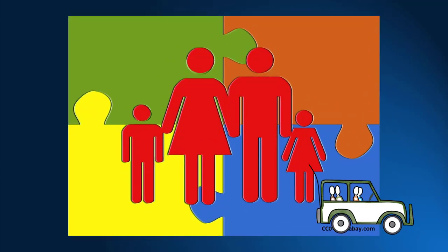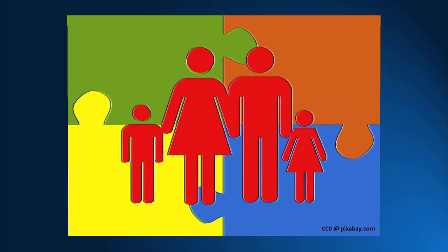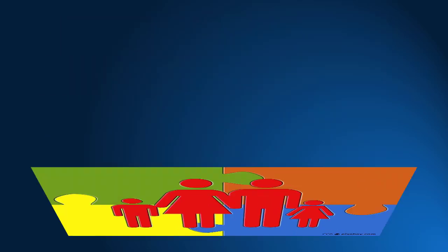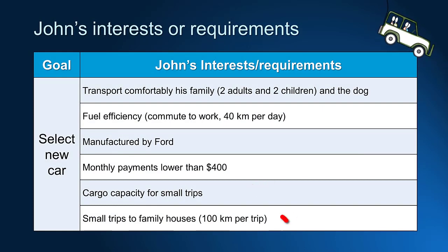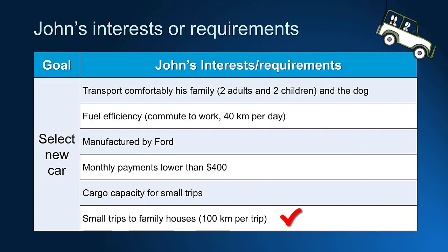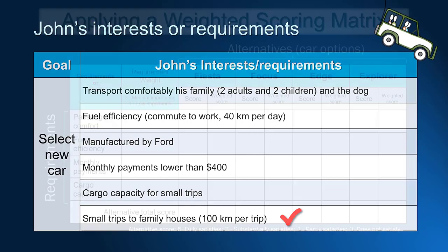Let's see who is involved in the decision: John, his wife, a 10-year-old boy, a 7-year-old daughter, and a dog. John needs a car to drive every day to work, and monthly they visit relatives that live 100 kilometers away — it is just a day trip.